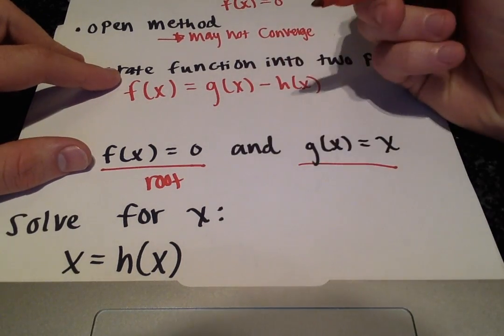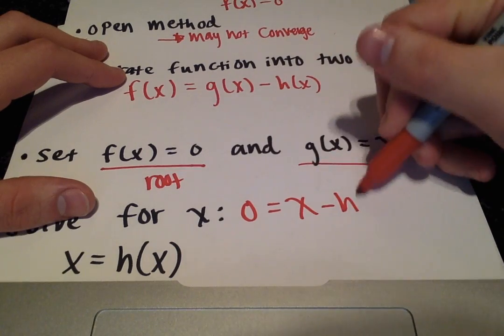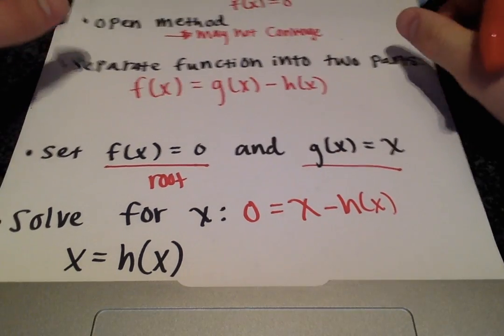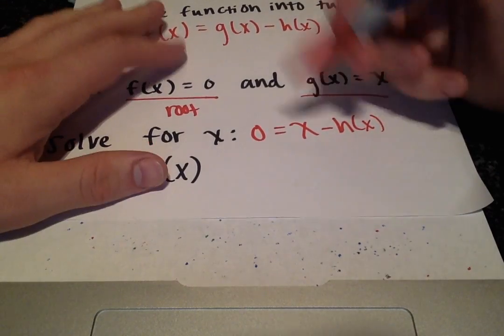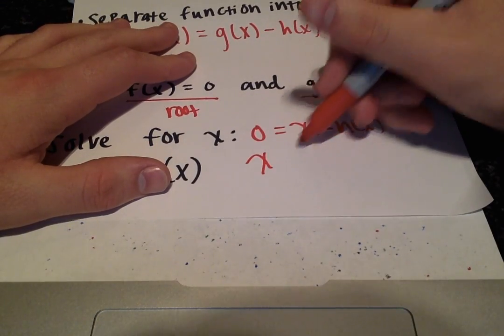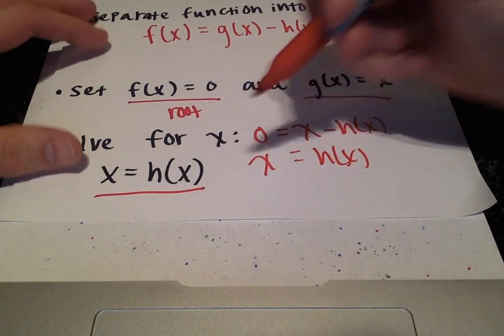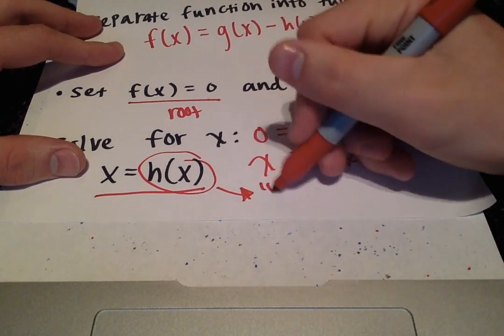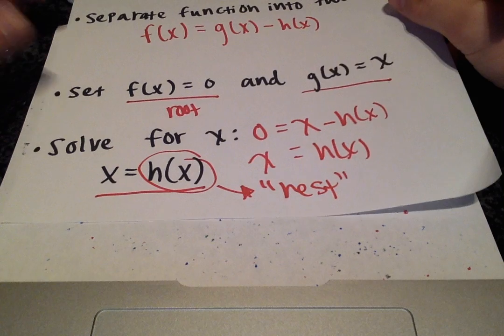We'll get 0 equals x minus h(x), and then what we're going to do is solve for x. When you do that, x equals h(x), and h(x) will be the rest of the equation. That'll make a little more sense as we go through this.